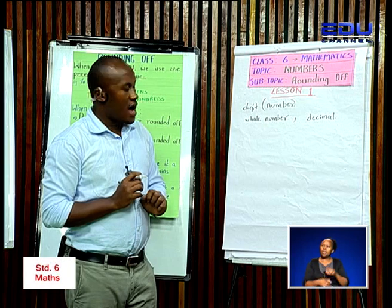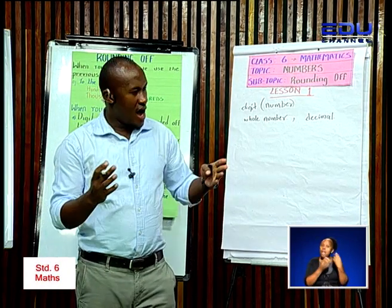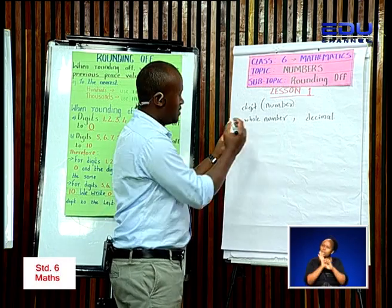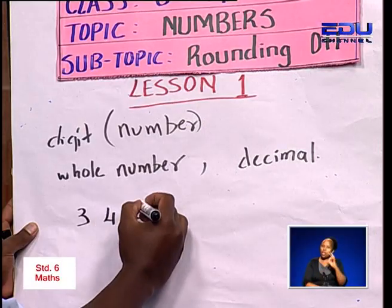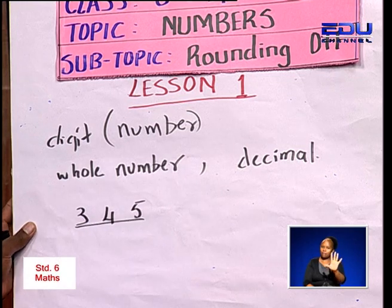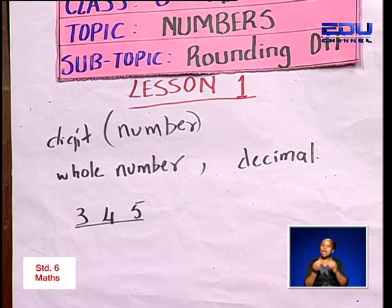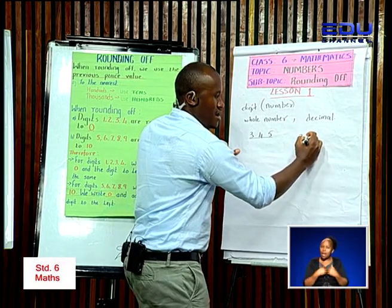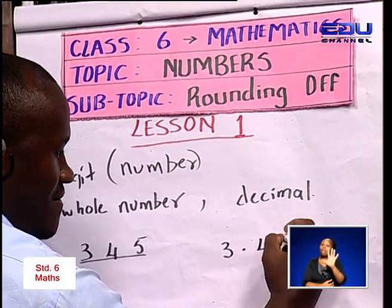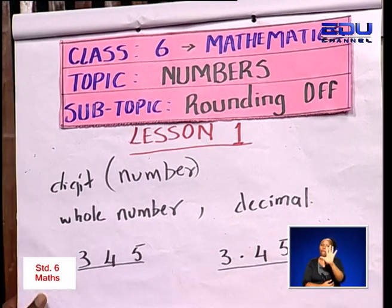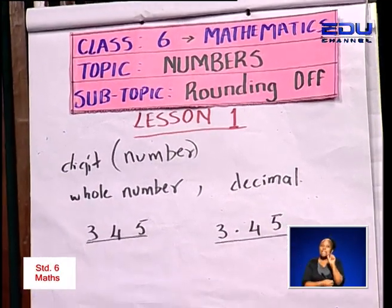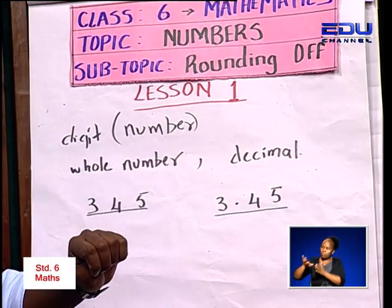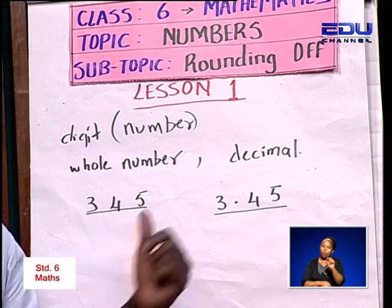When we talk about a whole number, let's say for example three, four, five — this is a number. After that, we can have three point four five. This is a decimal. So this is a whole number and this is what we call a decimal.